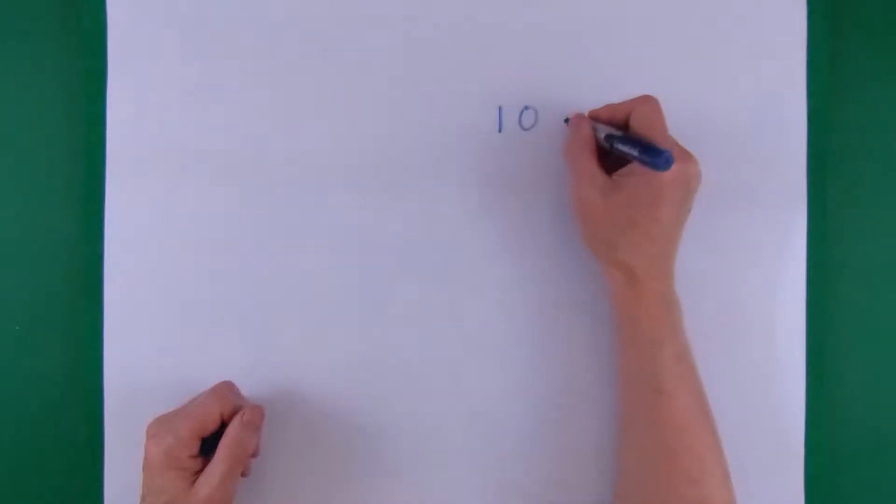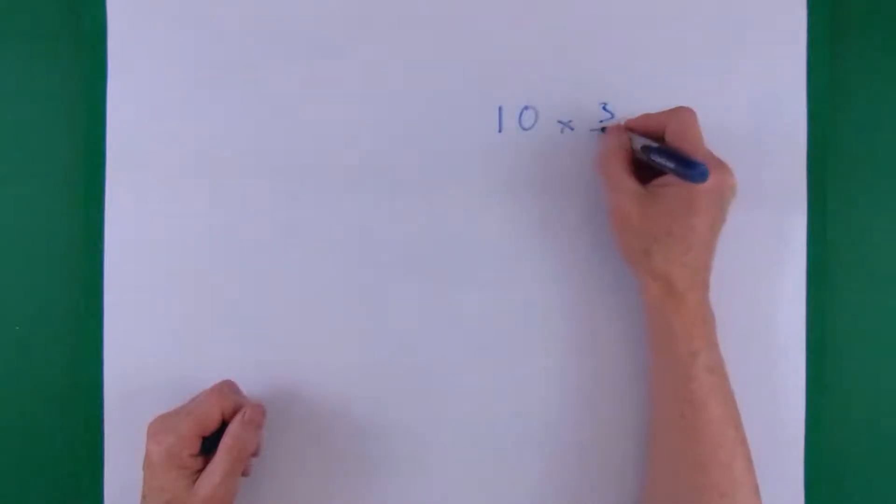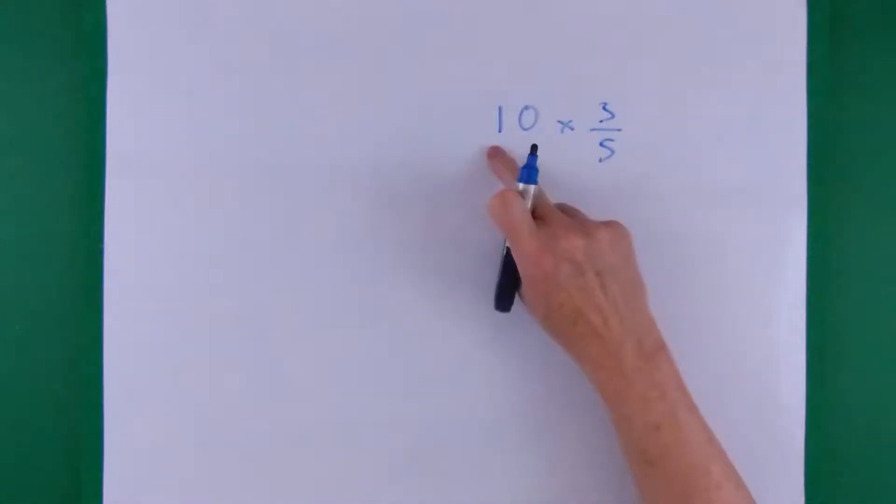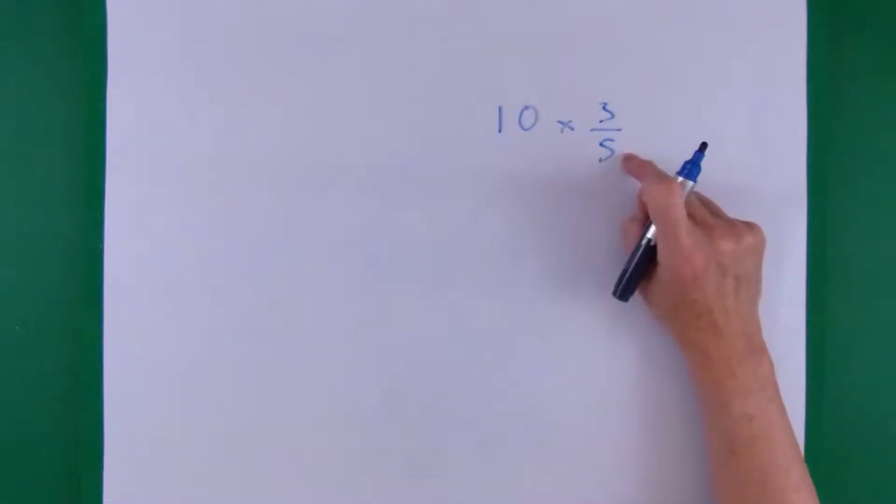For example, if you're doing 10 times 3 fifths, it's 10 times 3 and divided by 5. The 3 is the times number that you multiply by and the 5 is the divide number that you divide by.